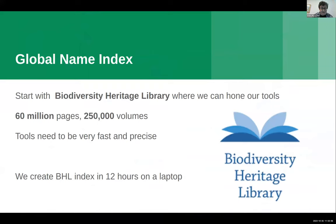To start with, everything is pretty hard. Gladly, there is a Biodiversity Heritage Library, which already started to collect quite a lot of biological open information. They have 60 million pages, 250,000 volumes. We can use them to make our tools very fast and very precise with high quality. We're able to go through all 60 million pages in 12 hours and create a BHL index that everybody can see on their page.